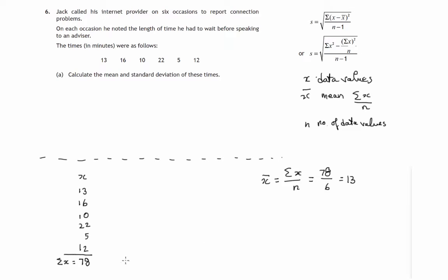So the mean is 13. The next thing we'll need to work out is x minus x bar - how far do these data values differ from the mean values, the deviations from the mean. So we're taking 13 minus 13 is 0, 16 minus 13 is 3, 10 minus 13 is negative 3, 22 minus 13 is 9, 5 minus 13 is negative 8, and 12 minus 13 is negative 1.